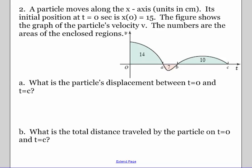Our next example deals with a picture. So we are given its initial position, units are in centimeters, so I give you units. Its initial position is 15, particle shows the graph's velocity, so this is our velocity. Particle's displacement between 0 and C. So I'm looking for the total area under this curve. So I do 14 plus a negative 7, because any area underneath is negative, plus 10 is equal to 17 centimeters.